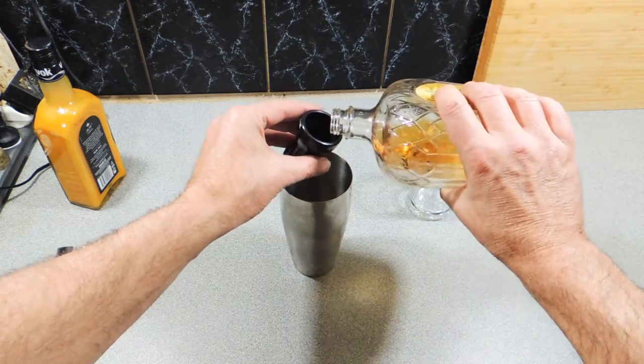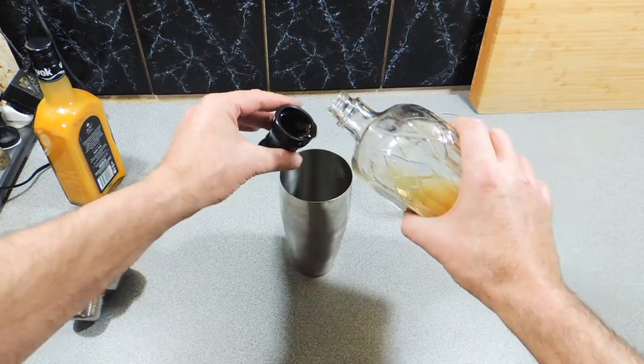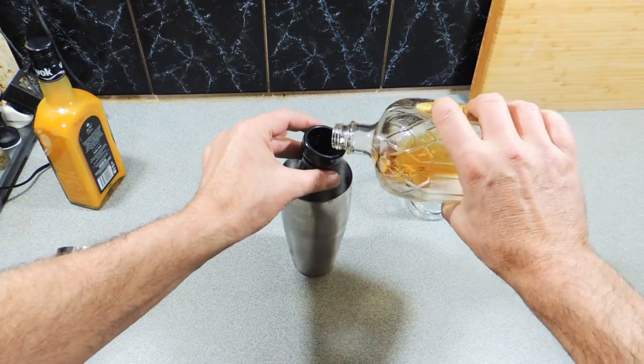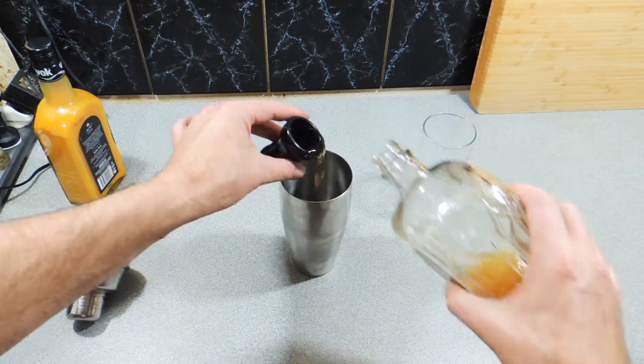We want around about 60 ml of a blended whisky. I'm actually using a bit of Crown Royal, 60 ml of Crown Royal is going straight in like that. This is a very simple cocktail this one, very simple.